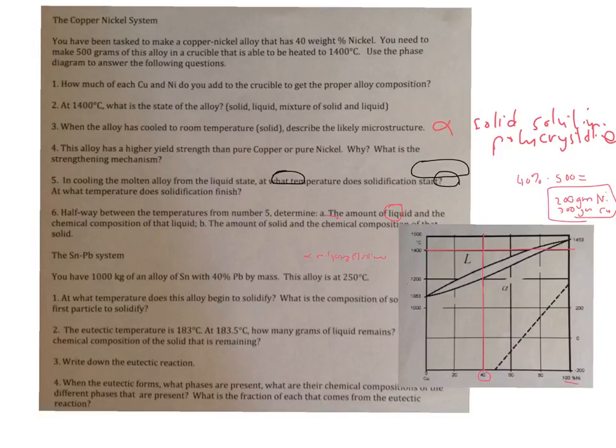So the next question, this alloy has a higher yield strength than pure copper or pure nickel. Why? What is the strengthening mechanism? So the key here is kind of remembering that there are several different strengthening mechanisms. And because copper and nickel are soluble in one another entirely, the likely strengthening mechanism that you're going to have is that they are going to substitute for one another on the lattice. Let's just indicate the mechanisms here. We have work hardening, and that's basically applying a plastic strain, increasing the dislocation density.